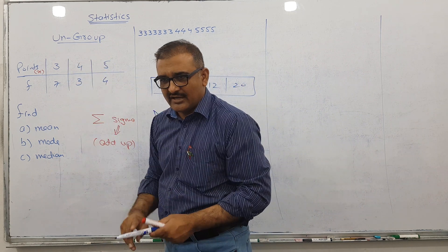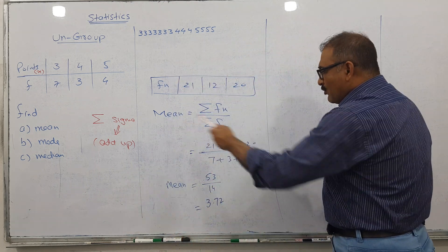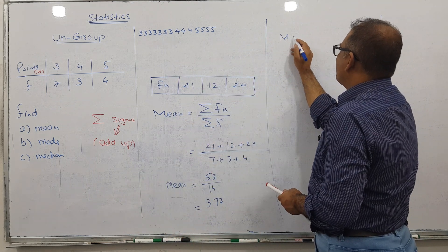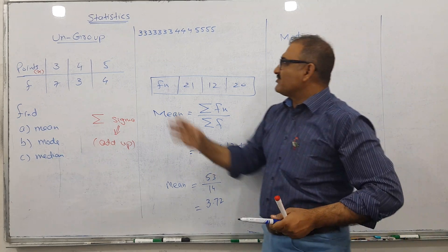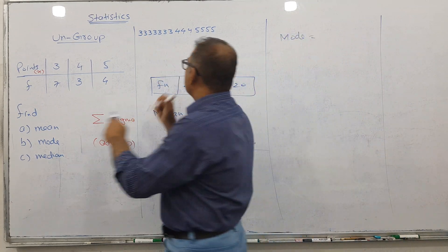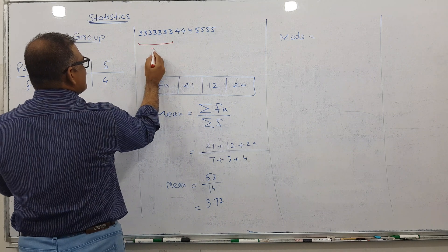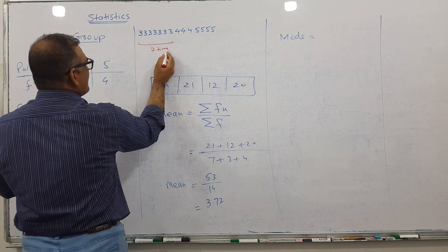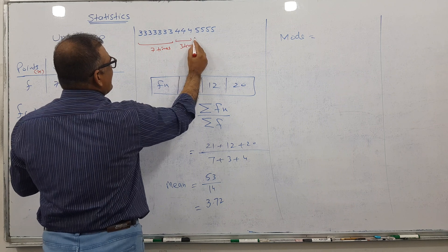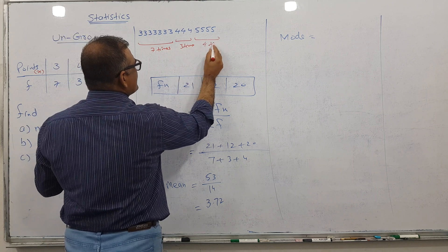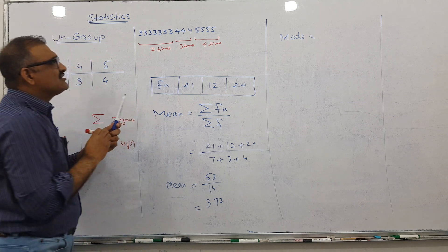Mode is the maximum repeating number. Three comes seven times, four comes three times, and five comes four times.